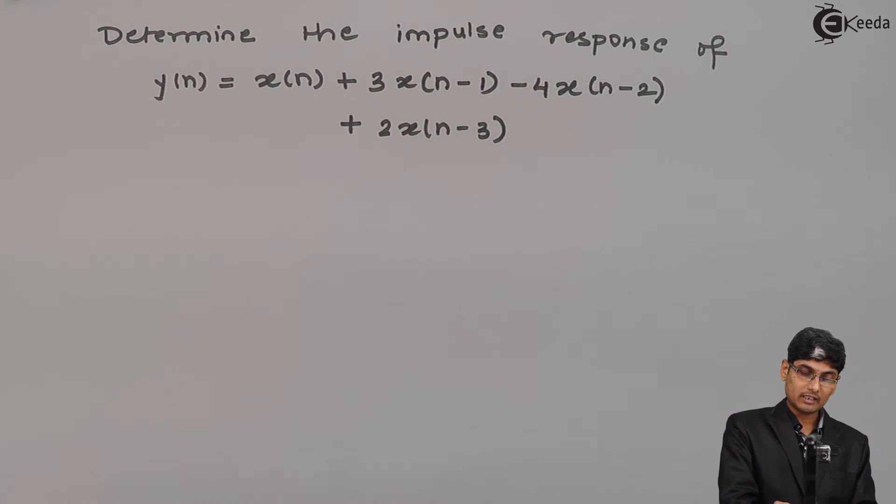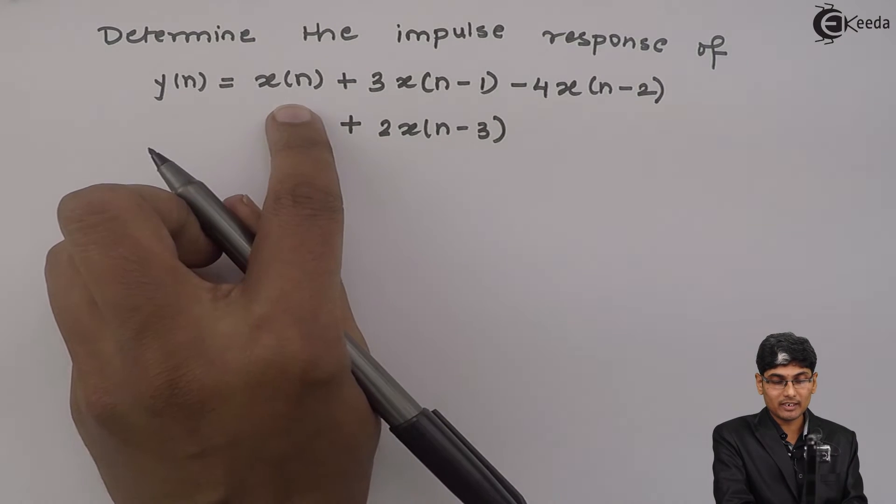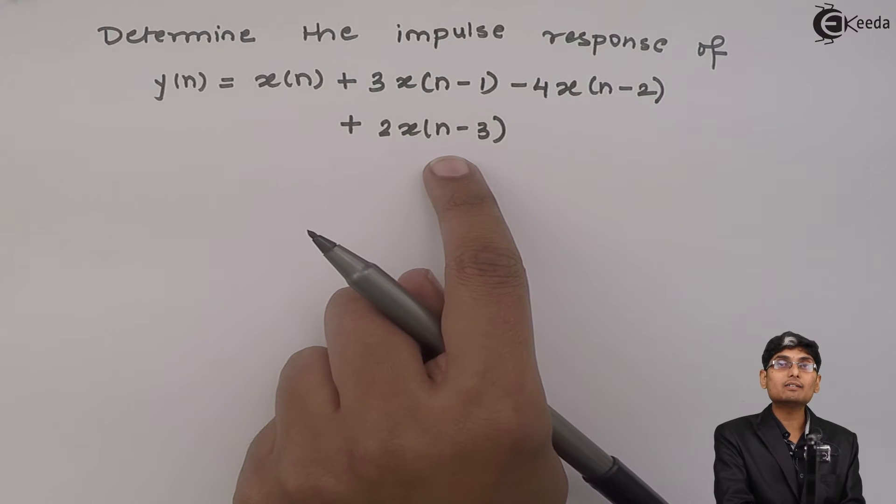So, I have a system given to me y of n equals to x of n plus 3 x of n minus 1 minus 4 x of n minus 2 plus 2 x of n minus 3. Now, in this difference equation, the point to observe is the output depends only on inputs—the present and the past inputs. This is my present input and these are all my past inputs.